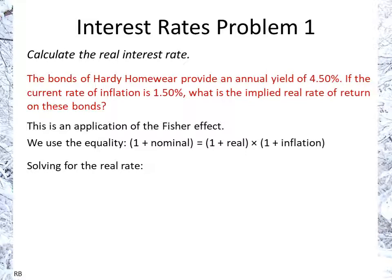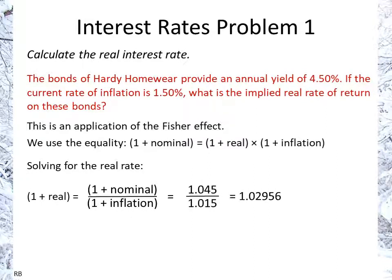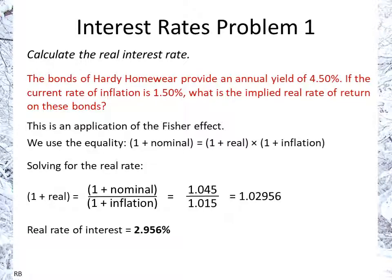Turning that around and solving for the real rate: 1 plus the real rate equals 1 plus the nominal rate divided by 1 plus inflation. Here we have 4.5% and 1.5%. You subtract 1, and the real rate of interest is 2.956%, which is the real gain in holding this bond.